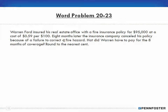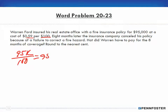Problem 20-23: Warren Ford insured his real estate office with a fire insurance policy of $95,000 at a cost of $0.59 per $100. So we divide by 100, which gives us $950, then multiply that by $0.59, which gives us $560.50.